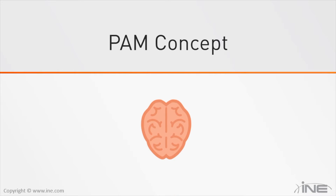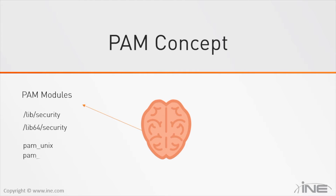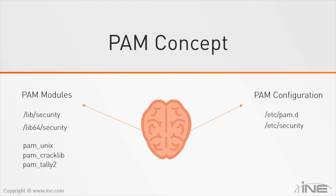PAM has two parts. The first part is a collection of PAM modules, which are dynamically linked libraries. On Red Hat systems, you can find them under /lib/security for 32-bit, and /lib64/security for 64-bit. Each module performs one specific task, such as traditional Unix authentication, enforcing password strength, or locking an account after too many failed logins. The second part is a set of configuration files under /etc/pam.d, and also some configuration files under /etc/security.